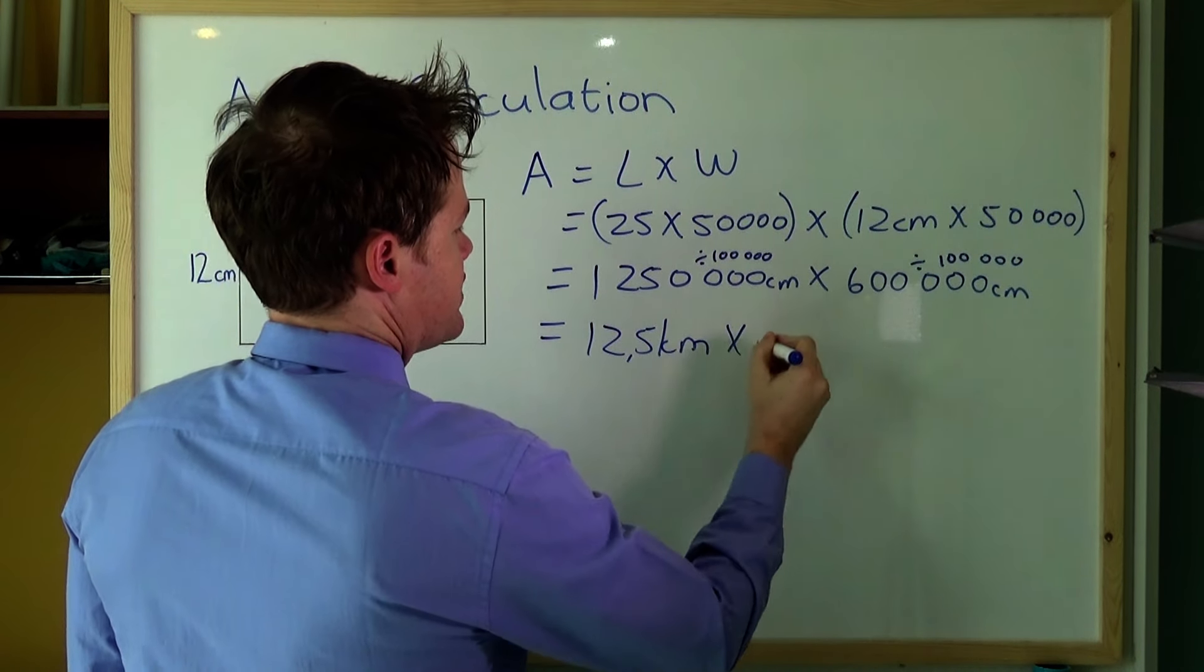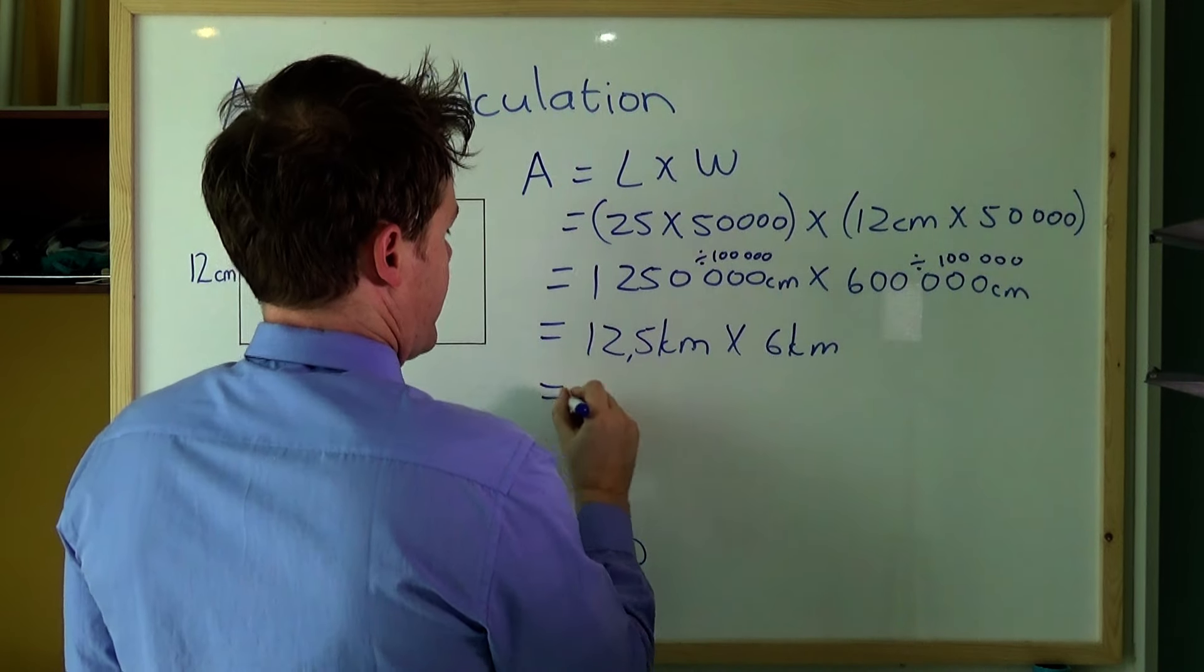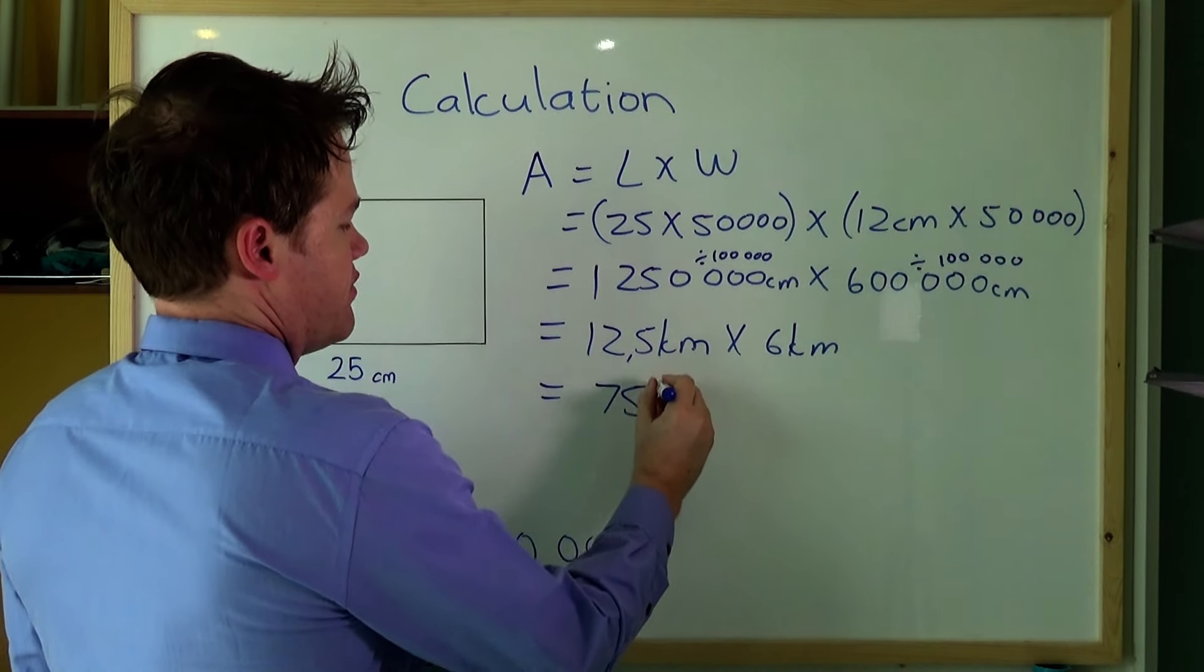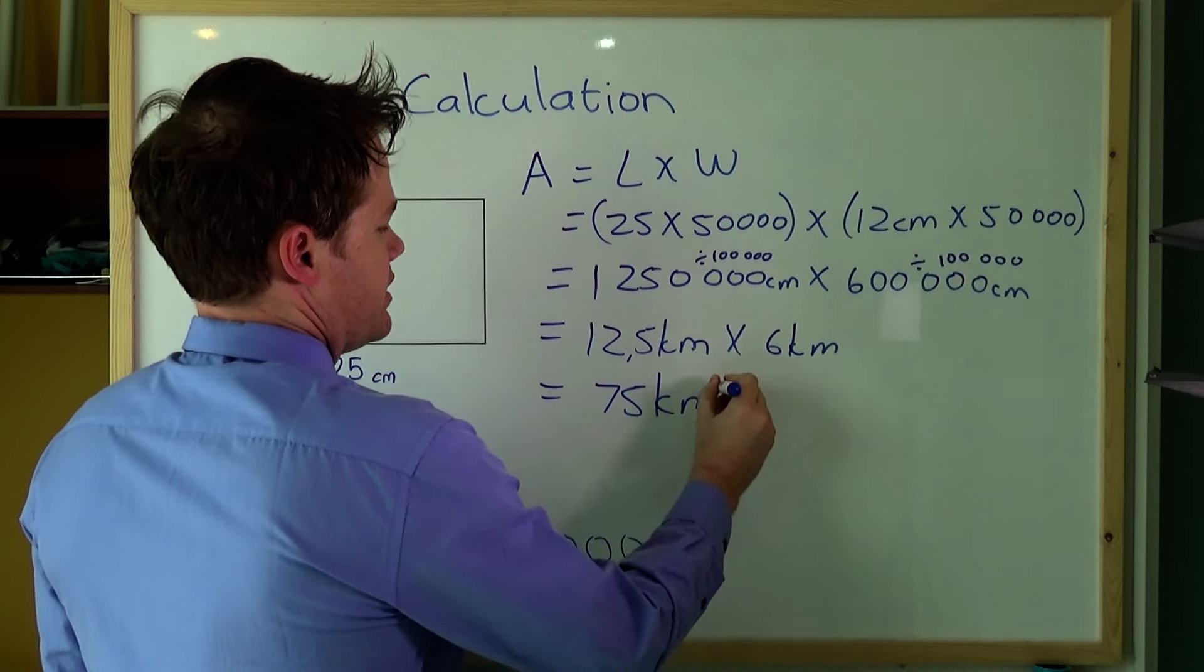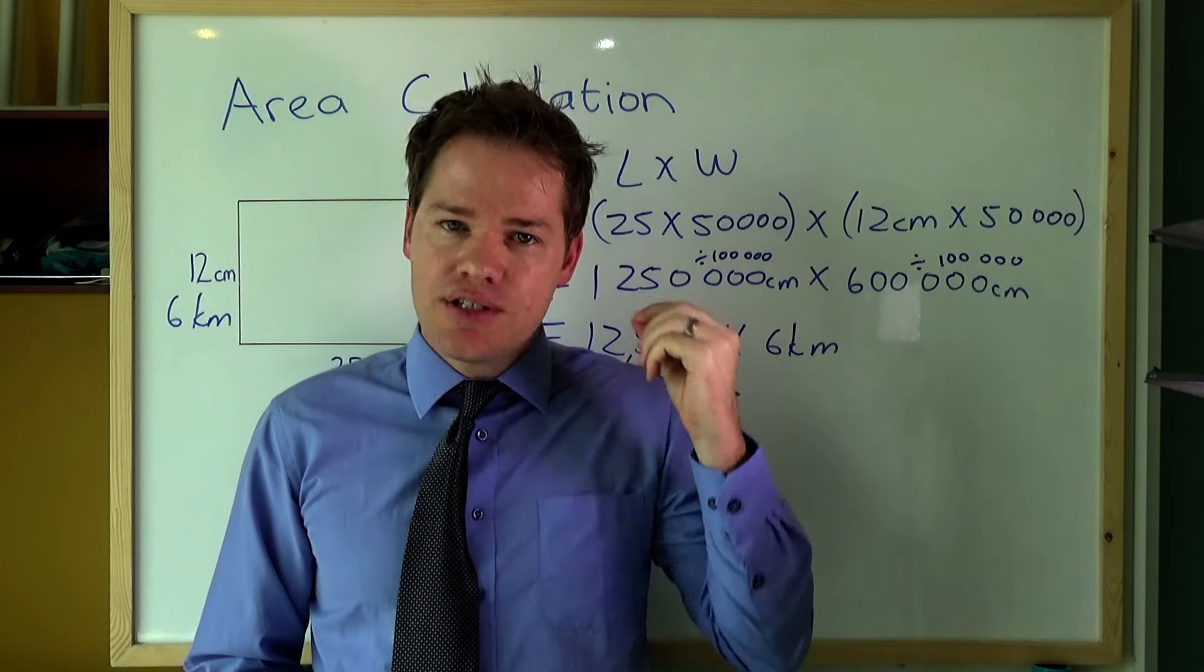So this is 12.5 kilometers times, that's easy, 6 kilometers gives you 75 square kilometers.